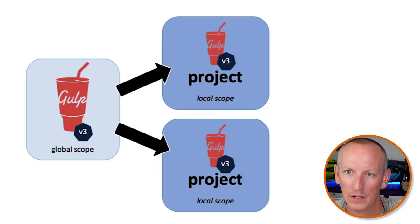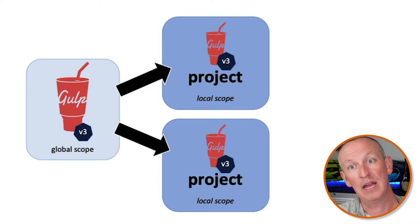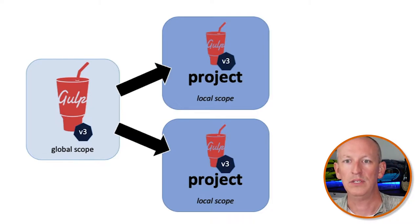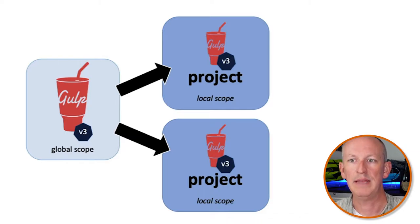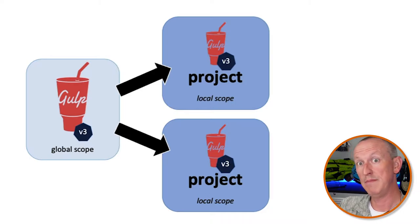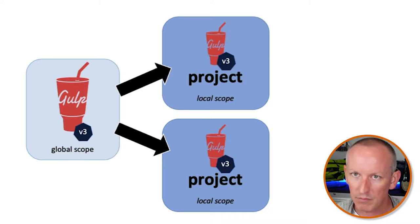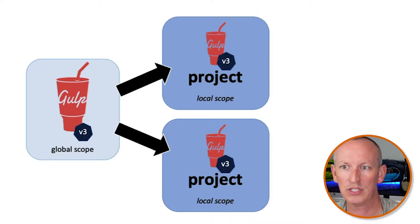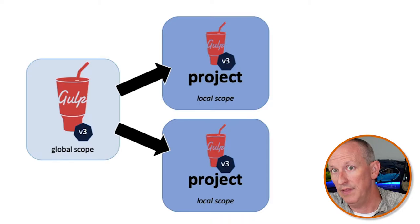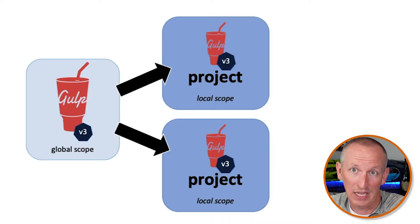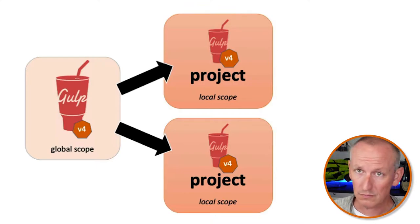But that doesn't explain why we need the Gulp CLI. Gulp, the program, can only run Gulp tasks that use the same matching library version. When you install Gulp version 3 globally, you can only run tasks in projects that use the Gulp v3 library. That's fine as long as everything is Gulp v3. You could do the exact same thing with Gulp version 4 — install it globally, and if your projects use Gulp v4, it works just fine.